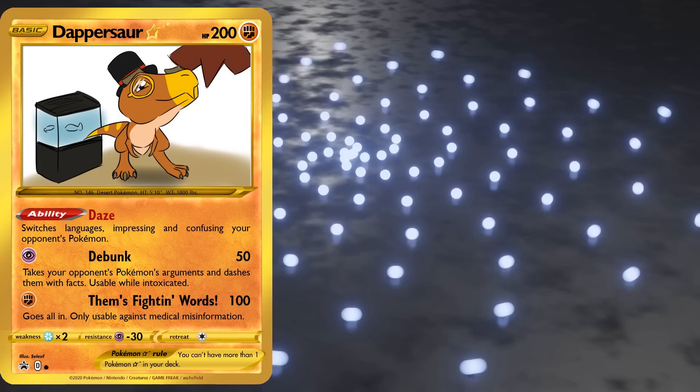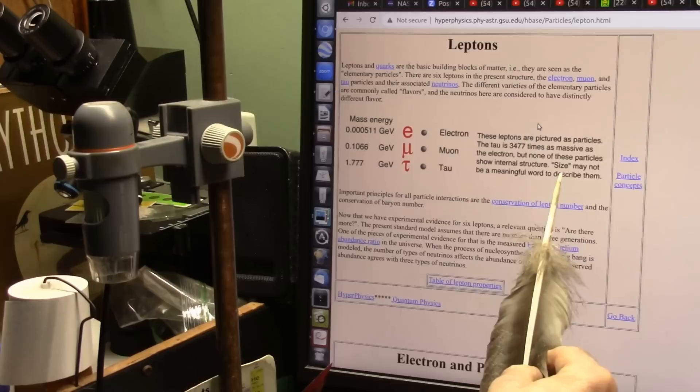The entire thing up till now has been point after point attempting to show that all these leptons, which Roger you can't even figure out how many there are, have internal structure. Stop pissing on me and telling me it's raining. I can tell the difference.